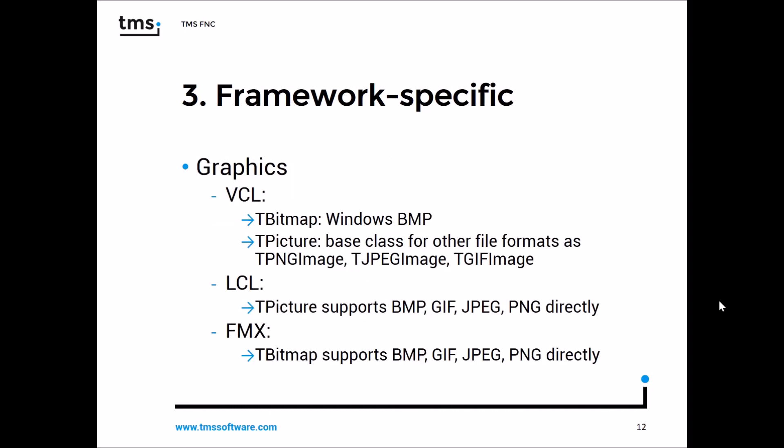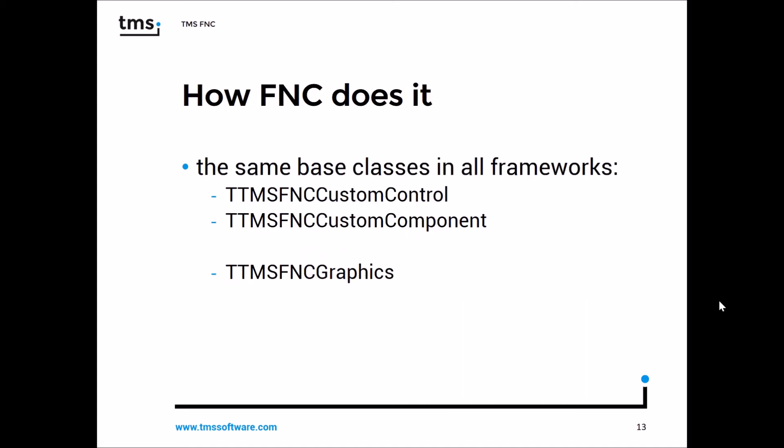Regarding graphics: in VCL you have TBitmap for Windows BMP files, and for other formats like PNG or JPEG you use TPicture, which has subclasses like TPNGImage and TJPEGImage. In Lazarus, TPicture is all-knowing — it loads bitmaps, GIFs, JPEGs, everything. FireMonkey also handles all formats, but calls it TBitmap again, which makes switching between frameworks confusing since sometimes you use TBitmap and sometimes TPicture. So let's see how FNC addresses this.